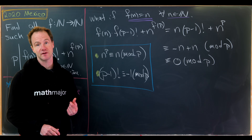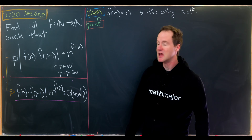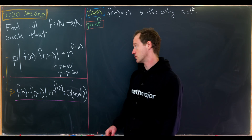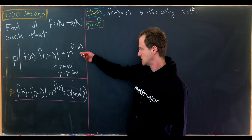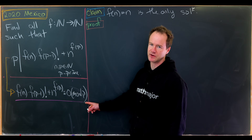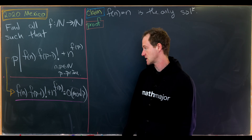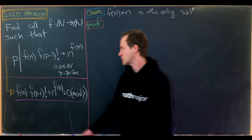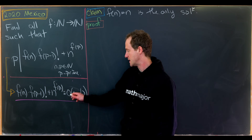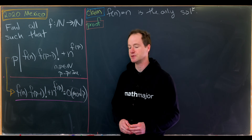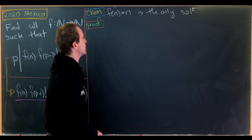Before we jump into the solution, note that the divisibility condition is the same as saying f(n)·f(p-1)! + n^f(p) ≡ 0 mod p in the language of modular arithmetic.